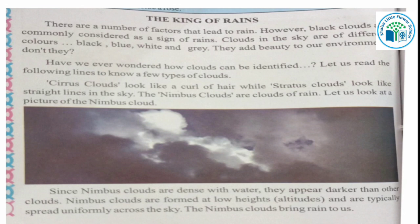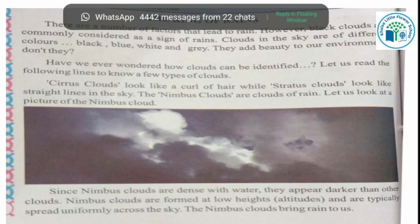Clouds add beauty to our environment, making the sky and our surroundings look very beautiful. Have we ever wondered how clouds can be identified? Let us read the following lines to know a few types of clouds. Cirrus clouds look like a curl of hair — curly, round-shaped clouds. Stratus clouds look like a straight line in the sky. Nimbus clouds are the clouds of rain.